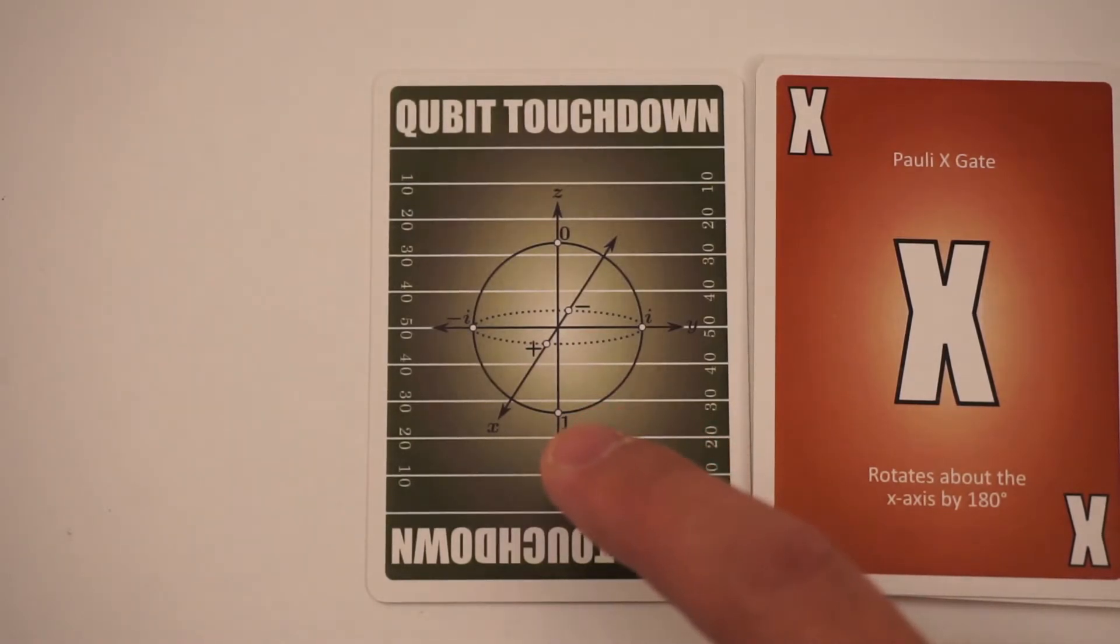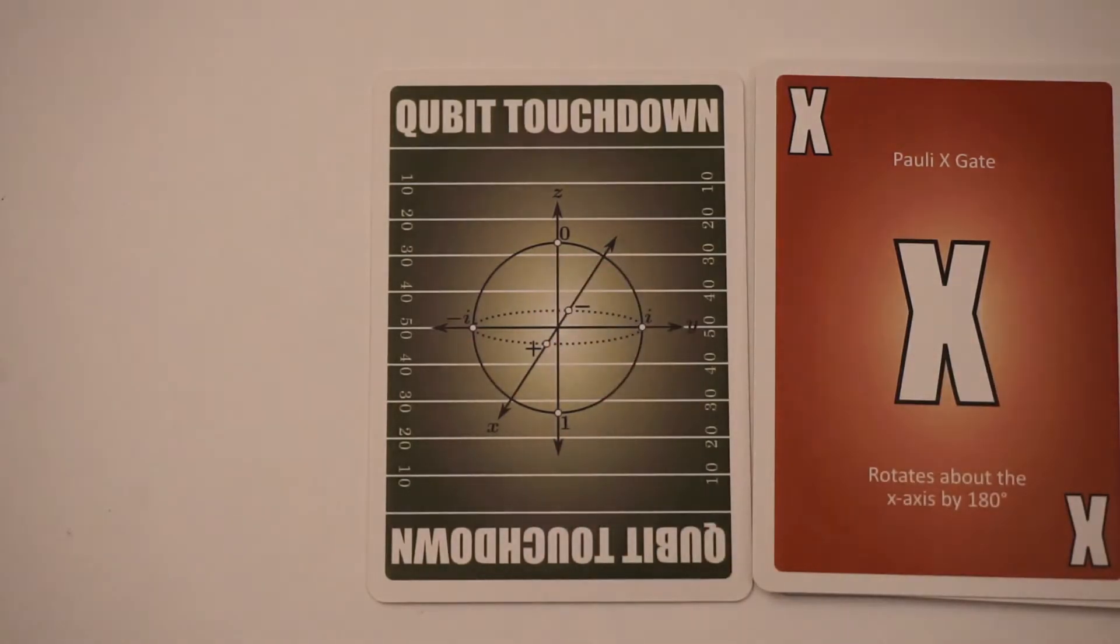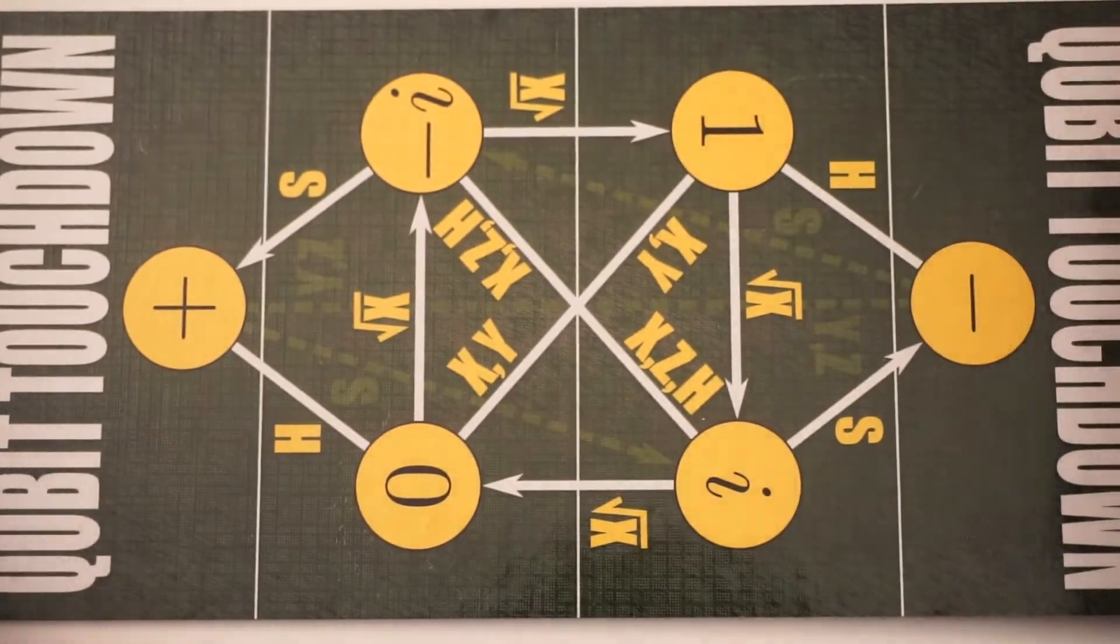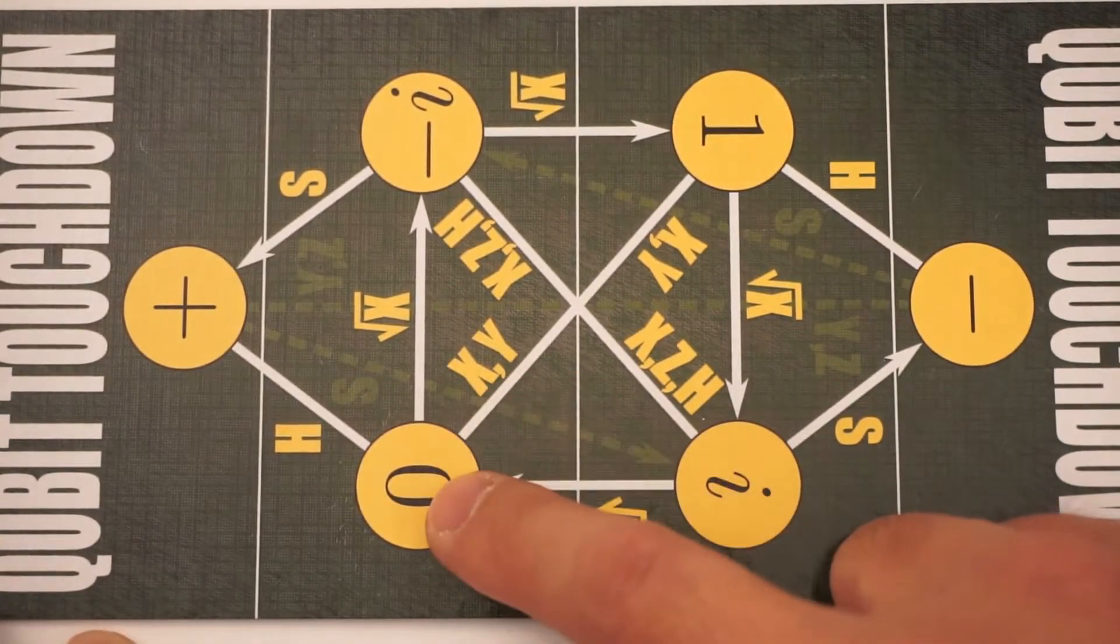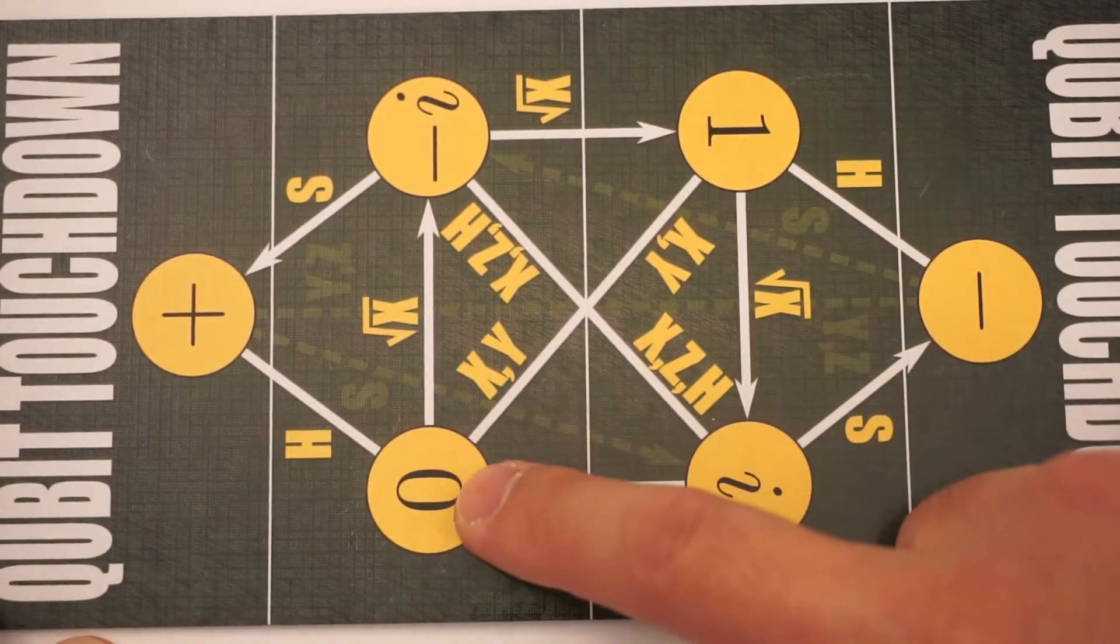And similarly, if you start at one and you rotate 180 degrees around the x-axis, you end up at zero. And if you look at the game, you see that if you apply an X gate to zero, you get one. If you apply an X gate to one, you get zero.